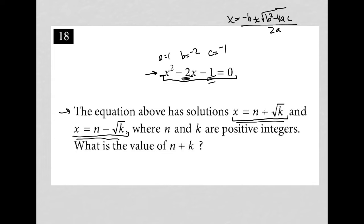Plugging these values in, I have x equals negative b, which makes it positive 2, plus or minus the square root of b squared—that's 4—minus 4 times a, which is 1, times c, which is negative 1. This is all over 2a, so all over 2.